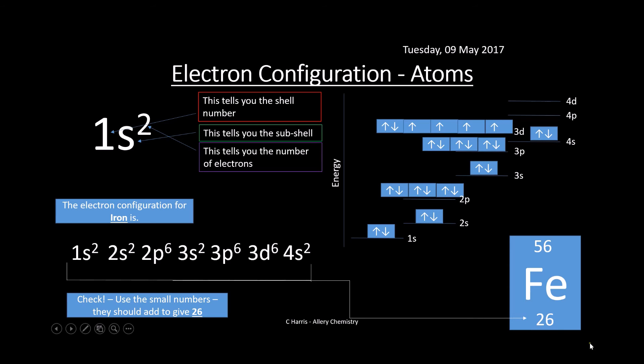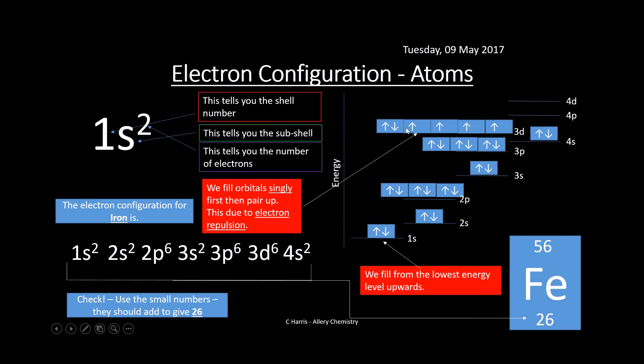We always fill from the lowest energy level upwards, so we start here and fill up as we go along. We fill orbitals singly first, and then we pair them up. That's why these fill singly, then we pair that one up. Electrons are negatively charged, so they repel each other.